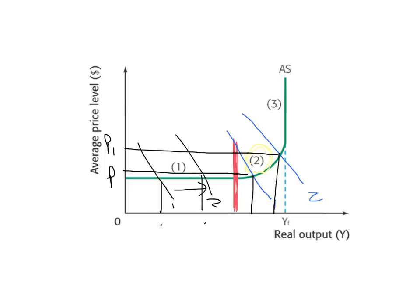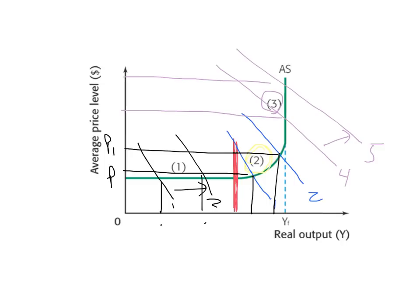Lastly on this curve, you will see region three. In region three, if there is a change in aggregate demand — say from AD4 to AD5 — the economy is already working at full capacity. The economy is experiencing full employment; it's reached its full potential. Real output is maxed out, and as a result, any change from AD4 to AD5 is going to have only inflationary pressure on goods and services in the economy.